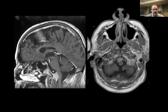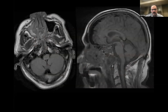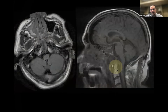Here is an example of a meningioma located ventrally in the foramen magnum area. The key landmark is the apical ligament and position of the tumor relative to the odontoid. If the tumor is above the odontoid and C1, C2, and the ligaments can be preserved, endonasal is considered. Anything below that calls for a far lateral approach. This case was done endonasally, preserving the anterior arch of C1 and the odontoid process — no instability was created.